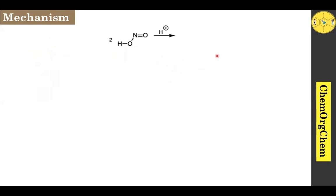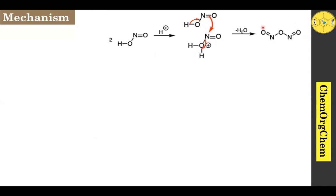Now let's break down the mechanism. Initially, two nitrous acid molecules react together to form a reactive intermediate. One of the nitrous acid molecules is readily protonated, then followed by another nitrous acid — the pi electron attacks this nitrogen center, then followed by loss of a water molecule, which generates the corresponding reactive intermediate. This reactive intermediate quickly reacts with the corresponding aliphatic amine.